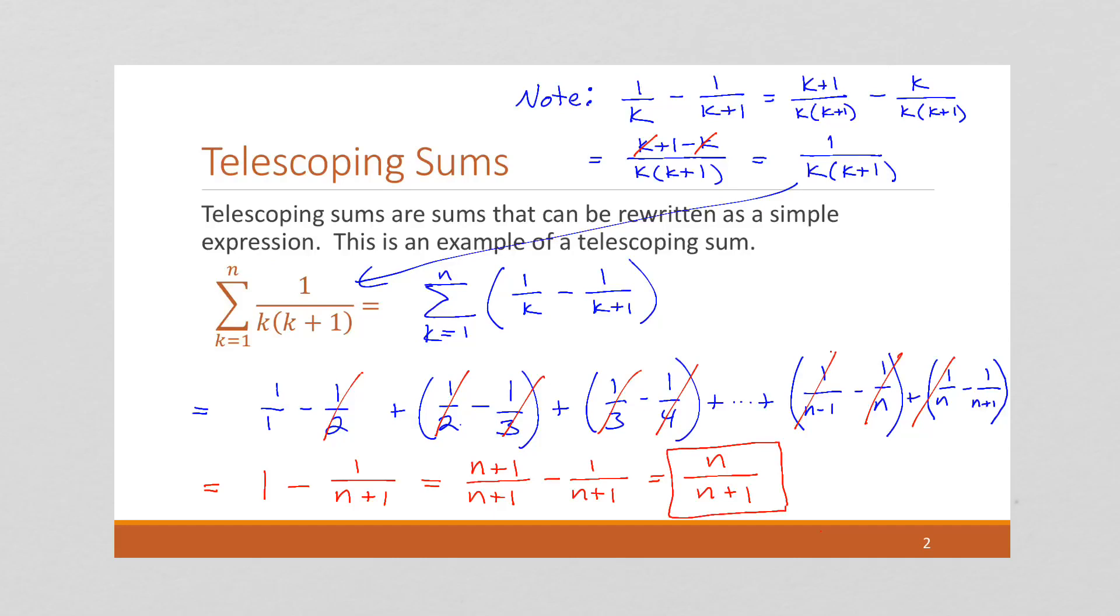So this entire sum, the summation up here that we started with has collapsed into a single simple formula. And that's what telescoping sums do. And they're pretty nice. And we'll see more examples of these later. But yeah, so what we can do is we can write the entire sum no matter what n is, because we can write it as a single simple formula.